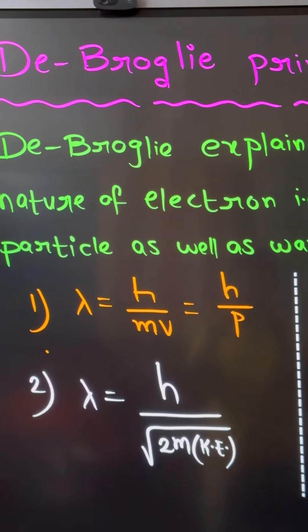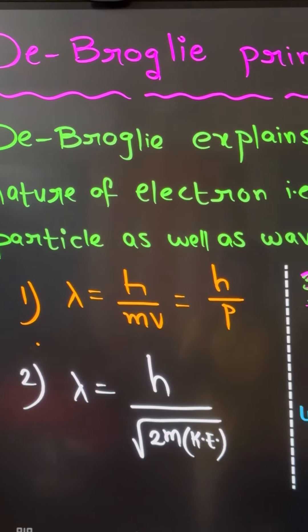Here we have four formulas. Lambda equals h by mv, or h by p. Lambda equals h by root over 2m into kinetic energy.